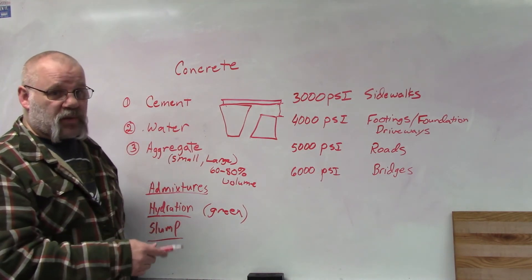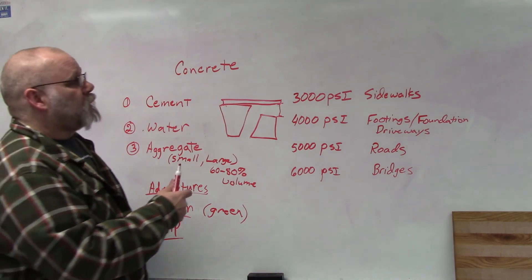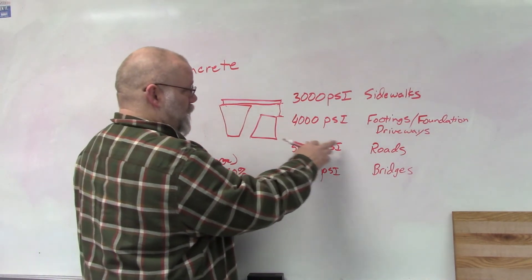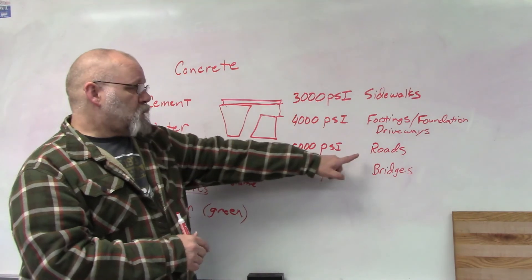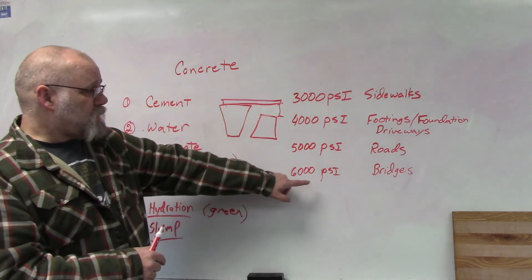Here are some of the PSI's that you would need if you're going to place the concrete. If you're building sidewalks, 3,000 PSI because the only traffic is foot traffic or maybe something a little heavier, multiple people standing together. 4,000 PSI for footings, foundations, and driveways. 5,000 PSI for roads, and then 6,000 PSI for bridges. Of course, PSI stands for pounds per square inch, so that has a pressure of 6,000 pounds per square inch for a bridge, so the concrete is strong enough to support whatever it's being designed to support.